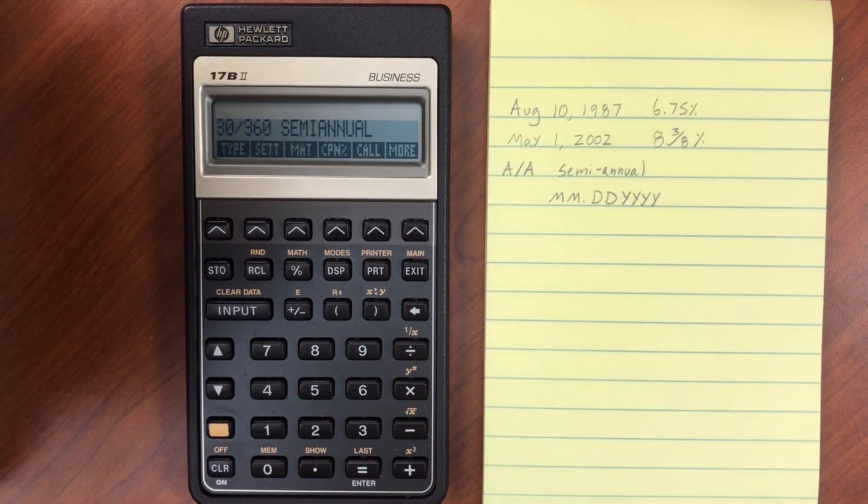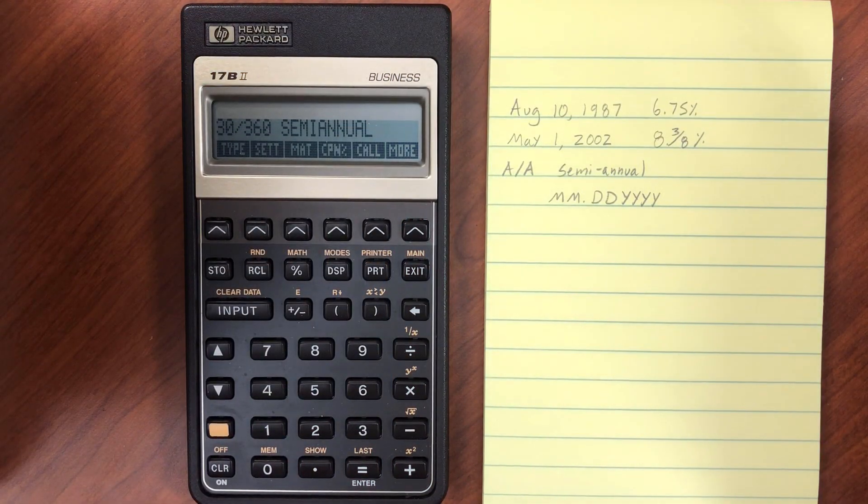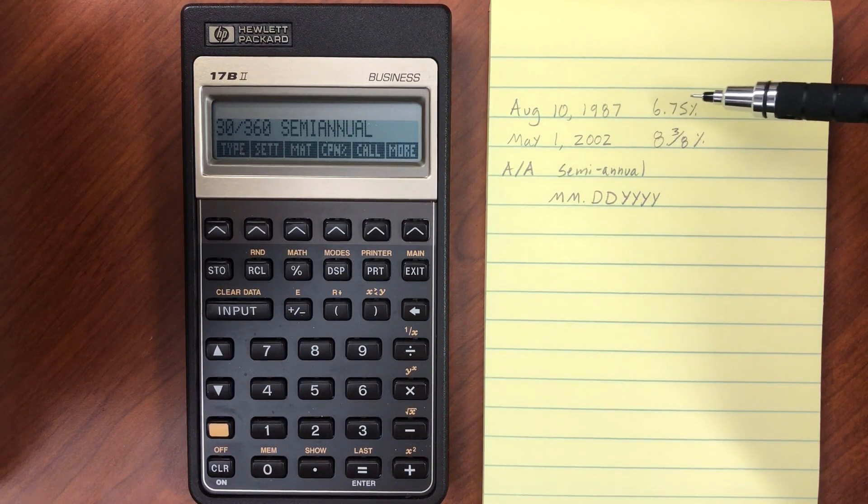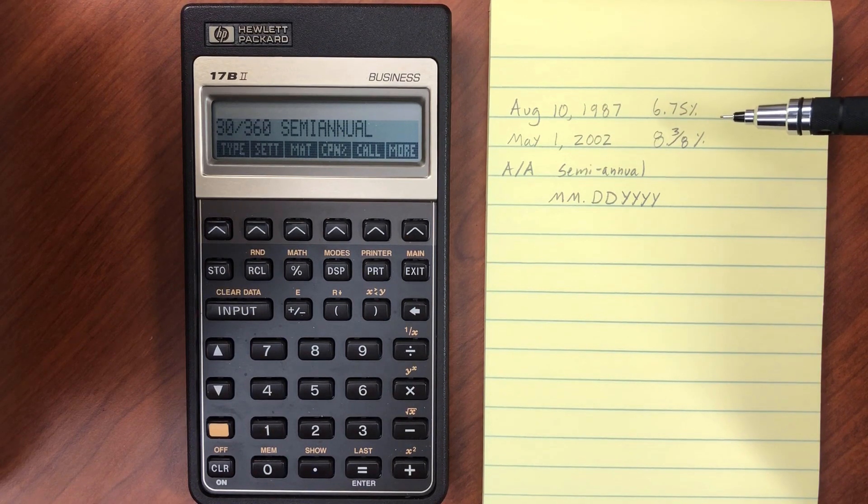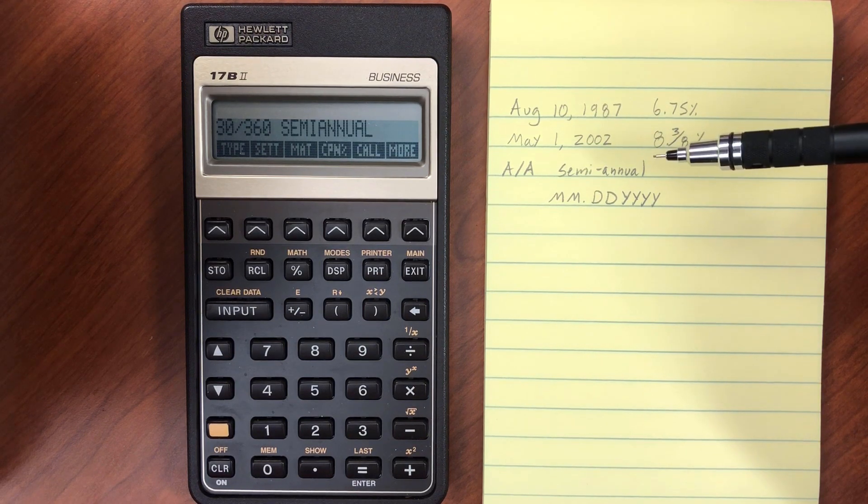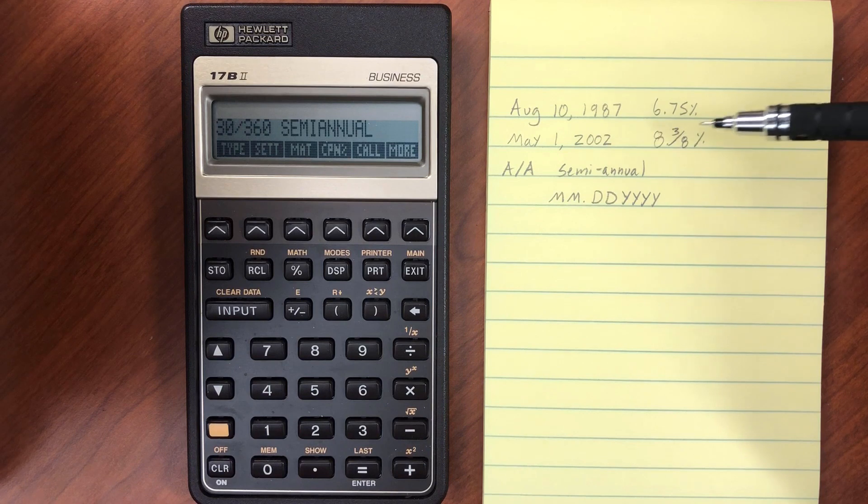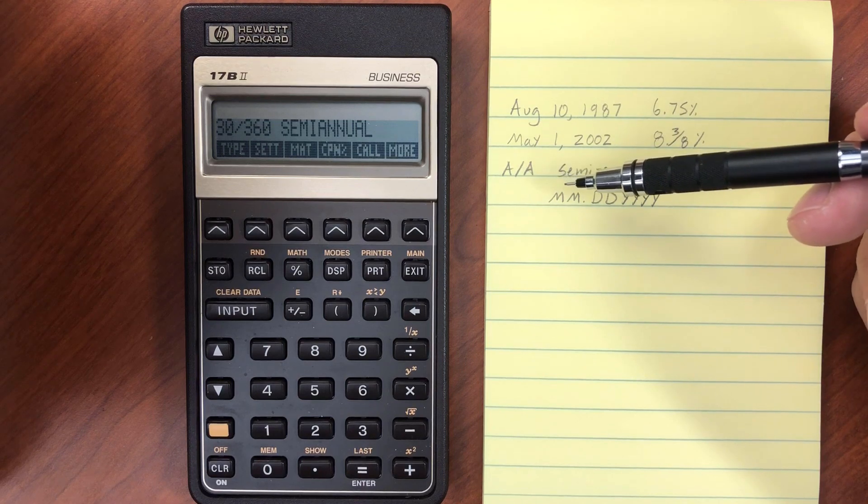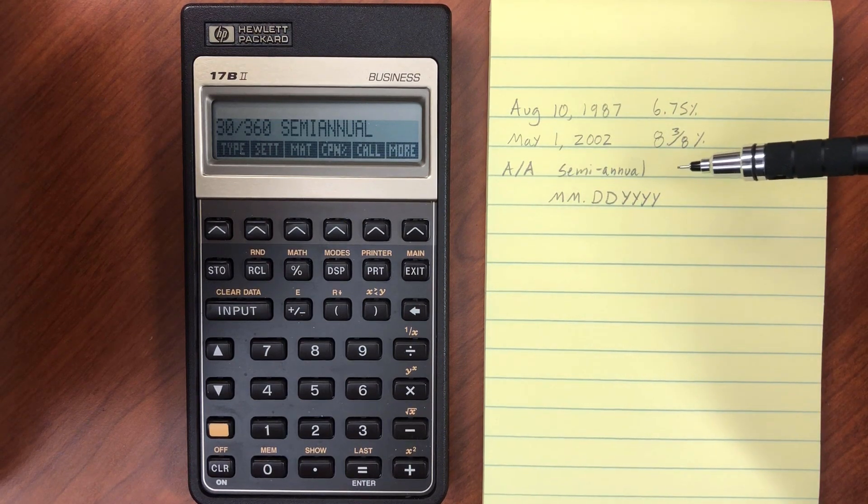Let's run through one example. We have a bond that we want to buy on August 10, 1987. It's a 6.75% treasury bond that matures on May 1, 2002, and we want a yield of 8.3%. We're going to use actual/actual with semi-annual coupon payments.